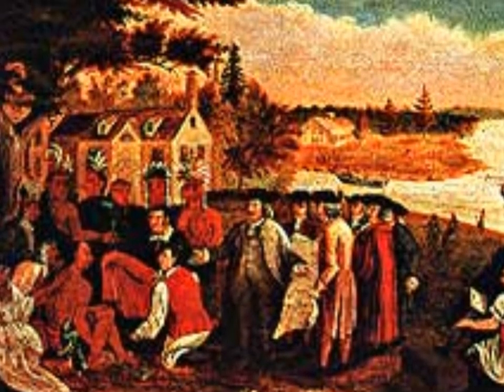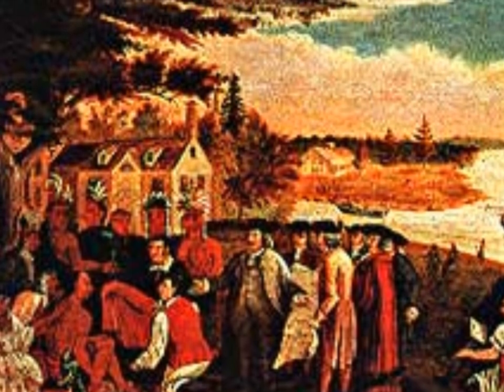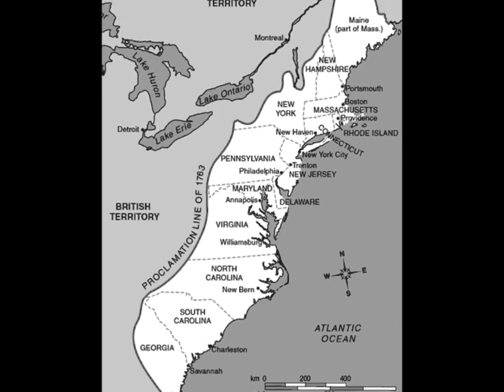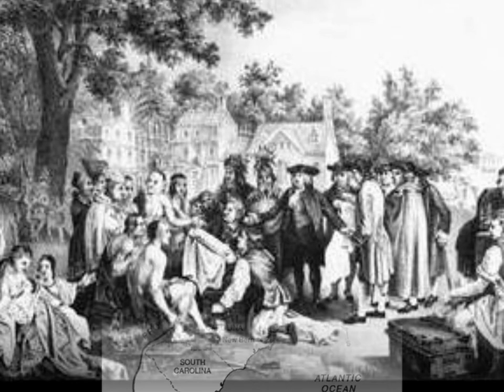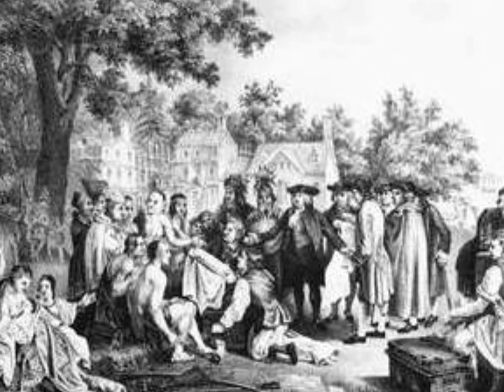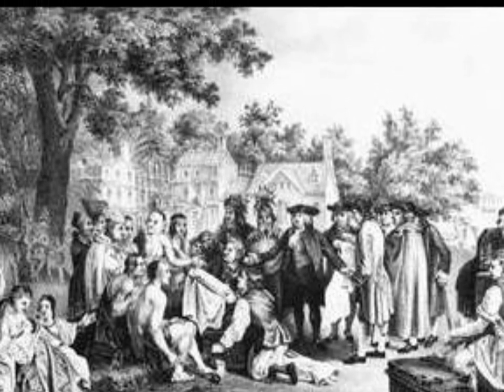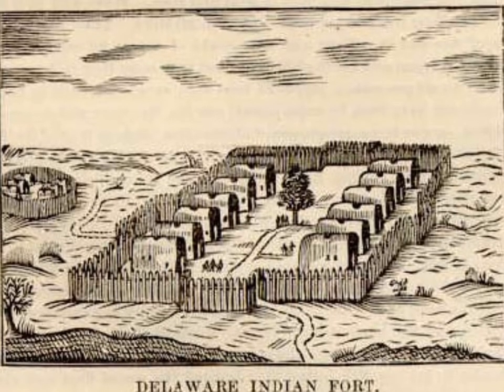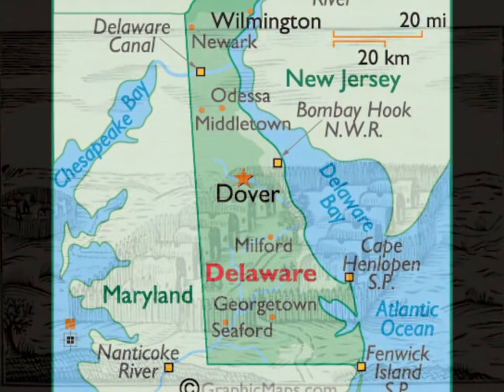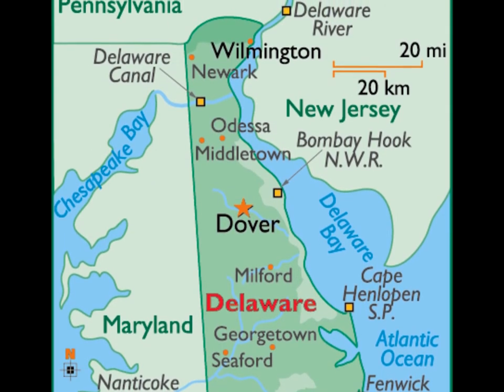The Duke of York gave away the southern part of his colony to Lord John Berkeley and Sir George Carteret, who named their colony New Jersey. New Jersey was a place for a diversity of people, much like New York, but New Jersey never had a strong harbor. The land was eventually given back to the king, as Berkeley gave his land away in 1674 and Carteret in 1682 because they did not receive as much profit as needed.